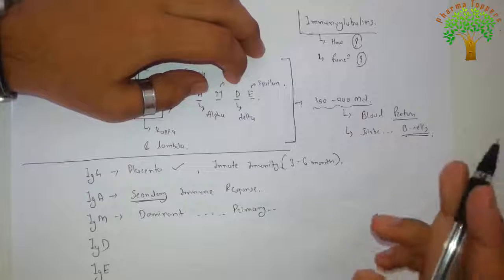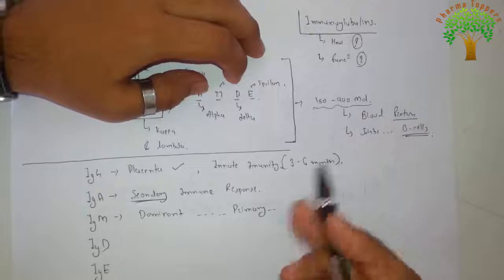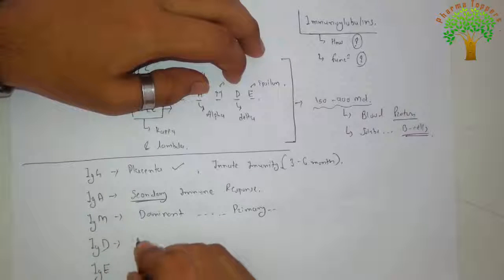Immunoglobulin D is found on B cell surface, where it functions as a receptor.